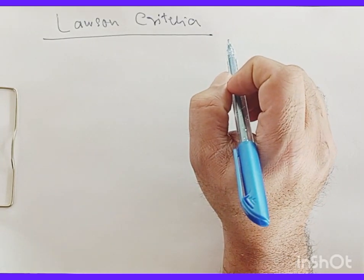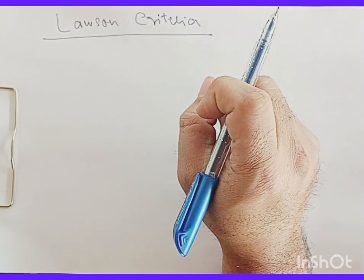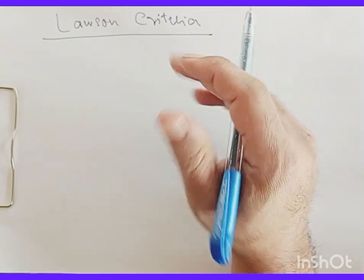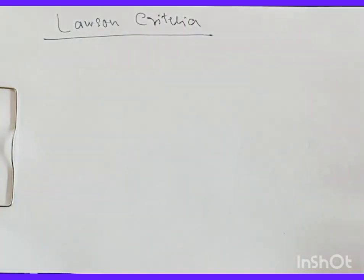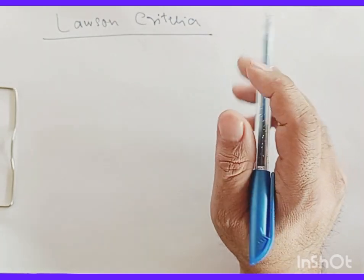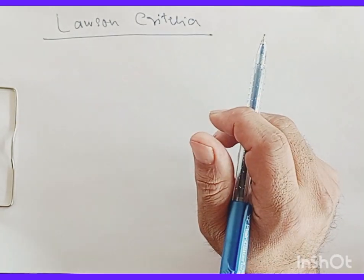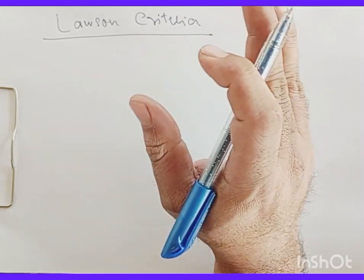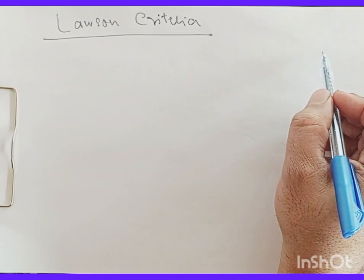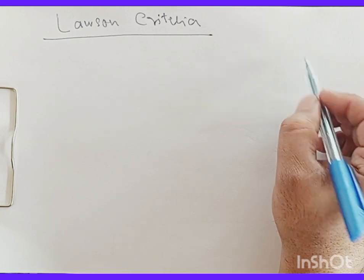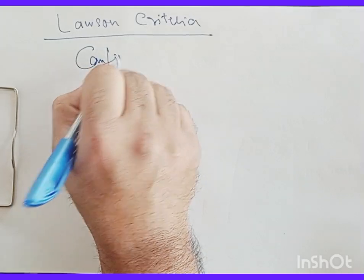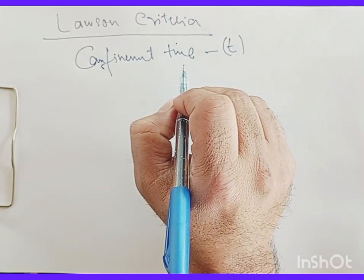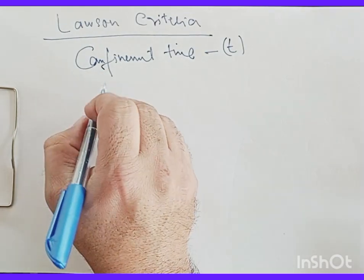Moving on, there is an important criterion for carrying out nuclear fusion — whether in terms of deuteron-deuteron or deuteron-tritium reactions. This criterion gives us the numerical value that must be satisfied. The number of fusion reactions taking place inside the plasma depends on an important parameter called confinement time τ, and on the number density of the nuclei, n.